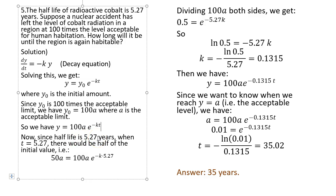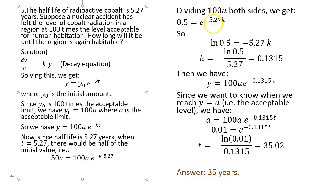Now let's take into account the half-life of 5.27 years. When t = 5.27, there will be half the initial value: half of 100a is 50a. So you set these two equal for t = 5.27 and solve for k. Notice that a cancels — divide both sides by a, then by 100 — take the ln to cancel the e, and solving for k gives k ≈ 0.1315.